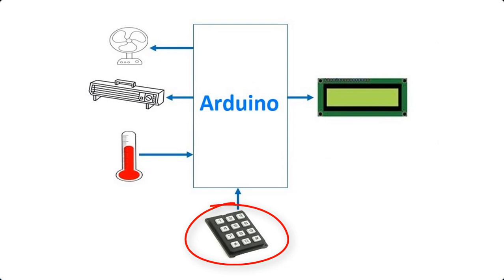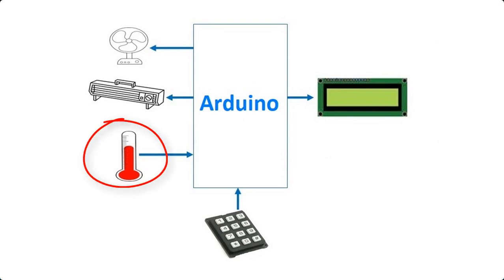The desired temperature is set using the keypad, but if you don't have enough pins on your Arduino board, the same can be achieved by using at least two push buttons with some minor changes in the code. The temperature is read using an analog sensor. In this example, we're going to use one LM35 temperature sensor, but more sensors can also be used depending on your requirement — like adding more than one temperature sensor or adding a humidity sensor as well. We're going to keep this project simple and use only one temperature sensor, but the possibilities are limitless to expand it further.